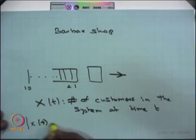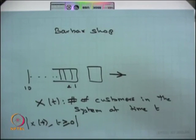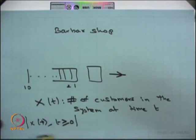Our interest is: given a capacity of 10, what is the waiting time when customers enter the system? From the customers' point of view, how do we reduce the average waiting time? From the barber shop's point of view, how can we increase capacity to make more profit? If I know the dynamics of X over t from 0 to infinity, I can find the average number of customers, average waiting time, and other probabilistic measures. This will be one of the stochastic processes we study.